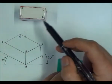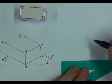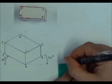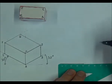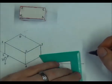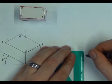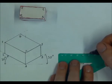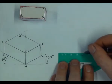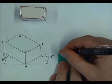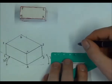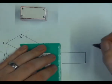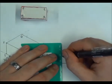Our main view is going to be ACFE. Line EA is the bottom line and has a length of 4cm. Line AC is a length of 2cm. Line CF is a length of 4cm. And line FE is a length of 2cm.